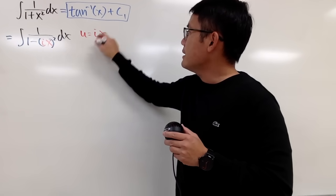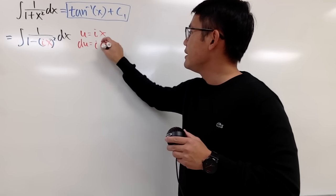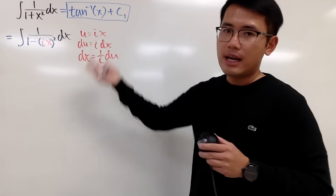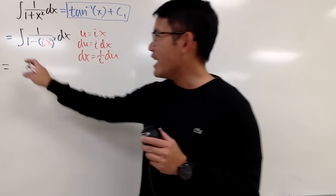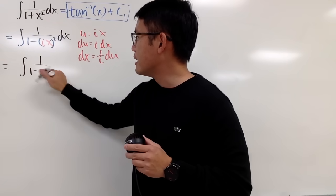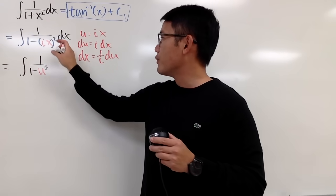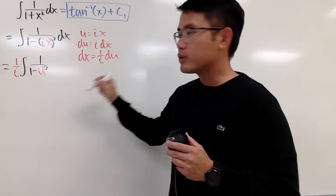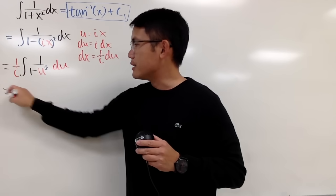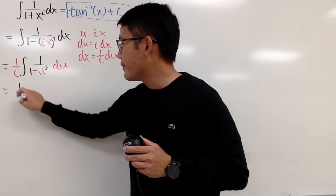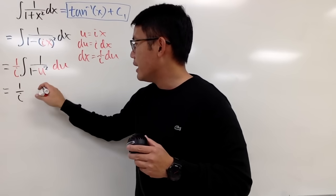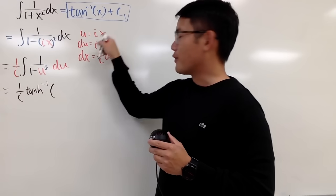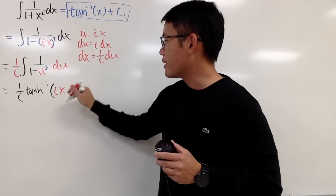So let u equal ix and then du equals i dx and then divide both sides by i. So we get dx equals 1 over i du. And now, of course, we take this integral to the u world. So we get the integral 1 over 1 minus u squared, 1 over i, and then we also have the du.